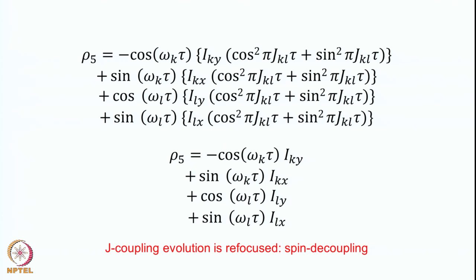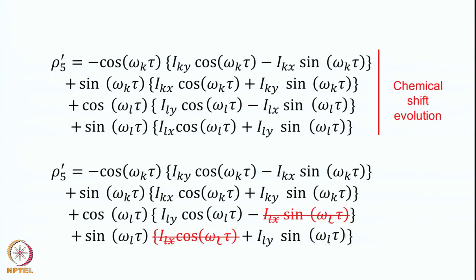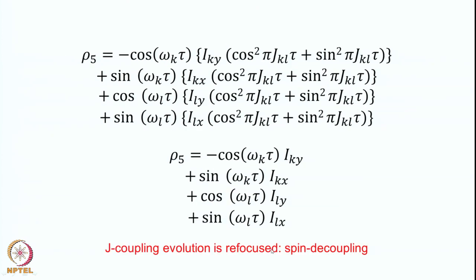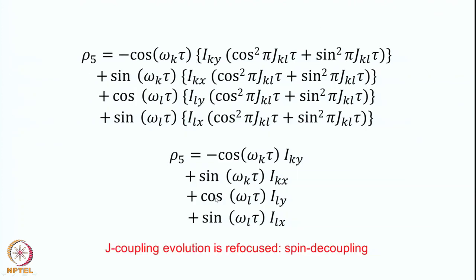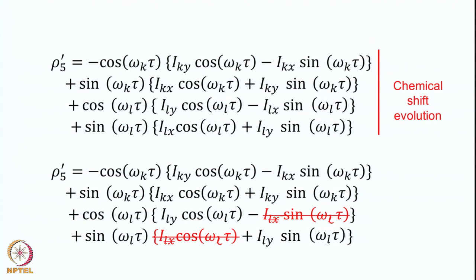We can do this calculation with the initial 90-degree pulse applied to one spin only and obtain the same result; since we included both spins it is more general. We also notice one thing: in the previous case after rho4, we calculated the J evolution then the chemical shift evolution — we have switched the order. Earlier we were calculating chemical shift evolution first and then J evolution; now we have done J evolution first and then we are going to do the chemical shift evolution, demonstrating that you can switch the order of chemical shift and coupling evolution.